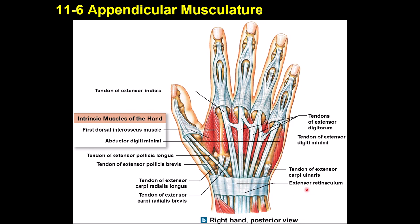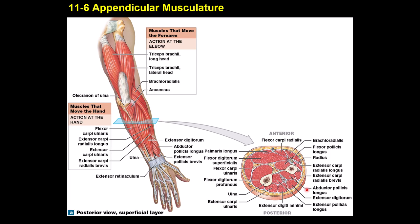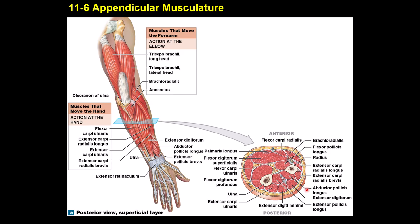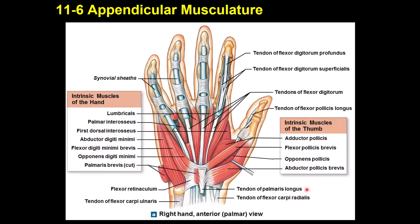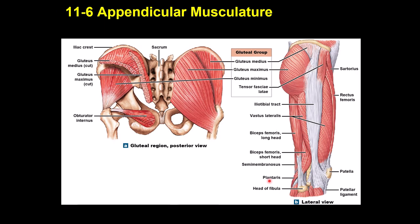The flexor retinaculum is located on the anterior wrist, partially visible here — it spans from one carpal area to the other. It is particularly important because it can compress a nerve in that area, which will be discussed when covering the nervous system.